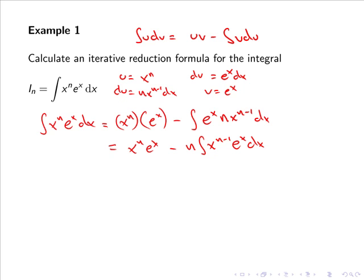It may seem we haven't made much progress, but consider that iₙ is the integral of xⁿ eˣ dx, whereas the integral we just obtained contains the integral of xⁿ⁻¹ eˣ dx, which is iₙ₋₁. Hence we can write iₙ = xⁿ eˣ − n · iₙ₋₁. This is the iterative reduction formula for the integral, allowing each case to be expressed in terms of the previous one.